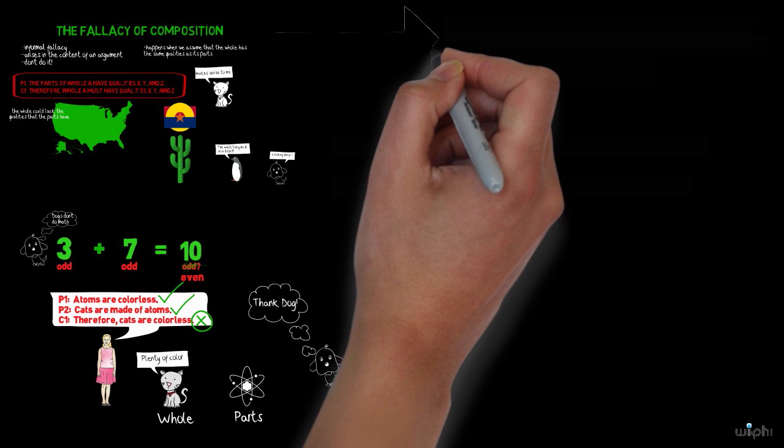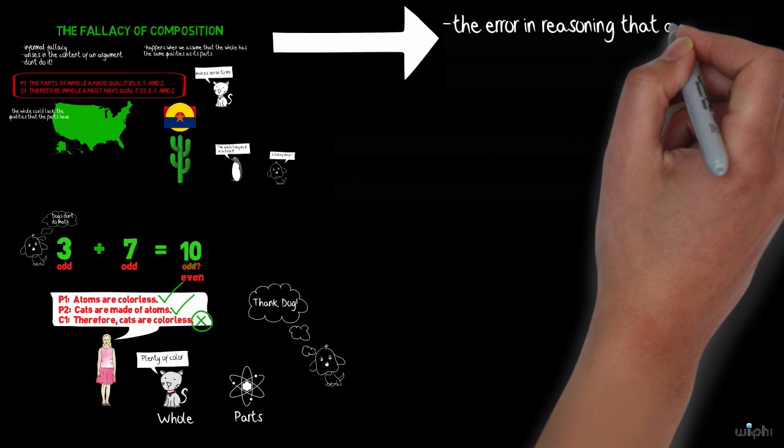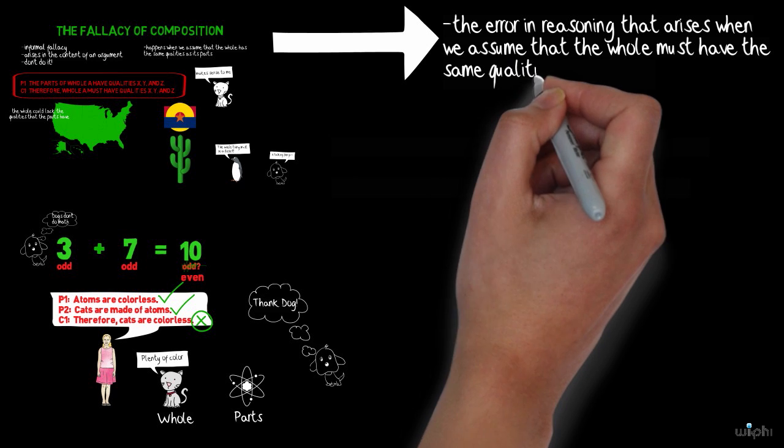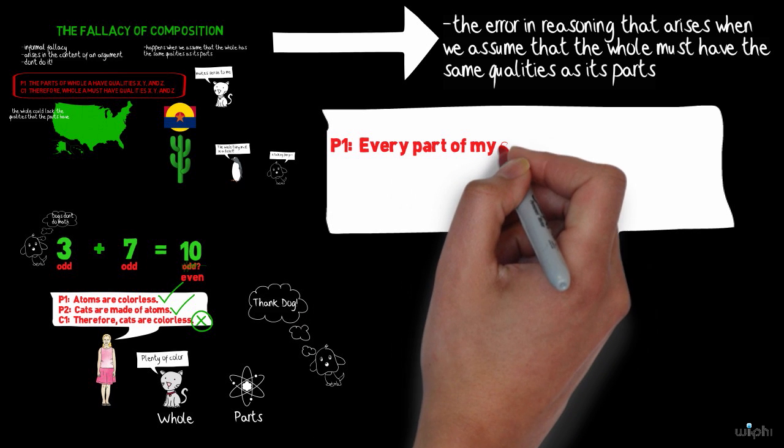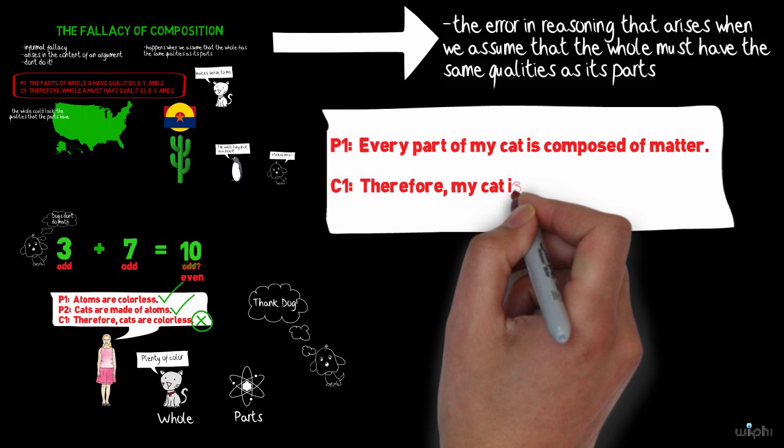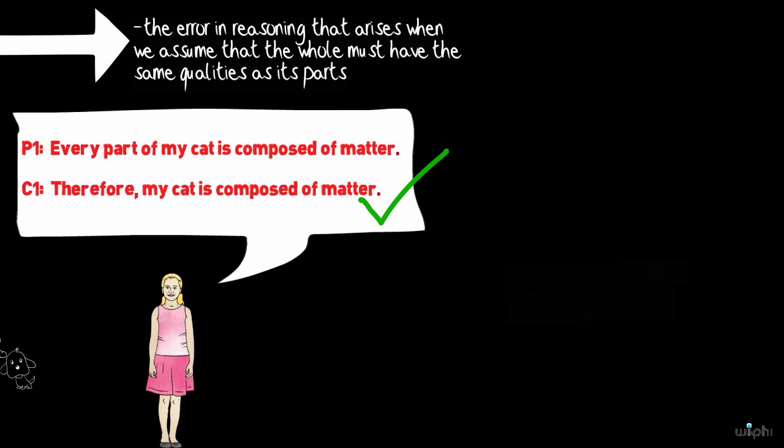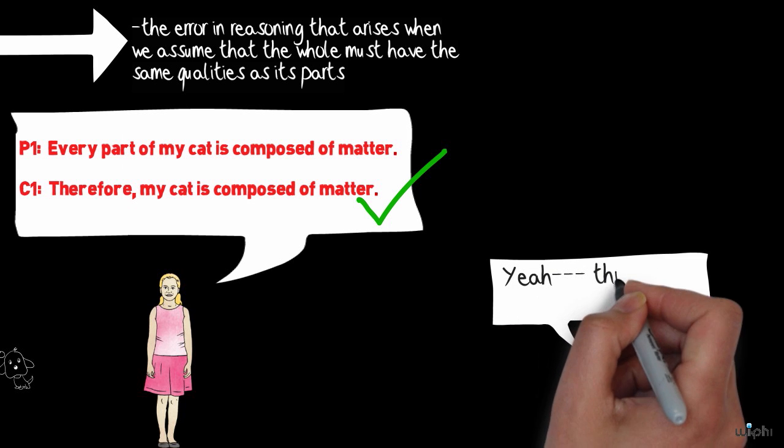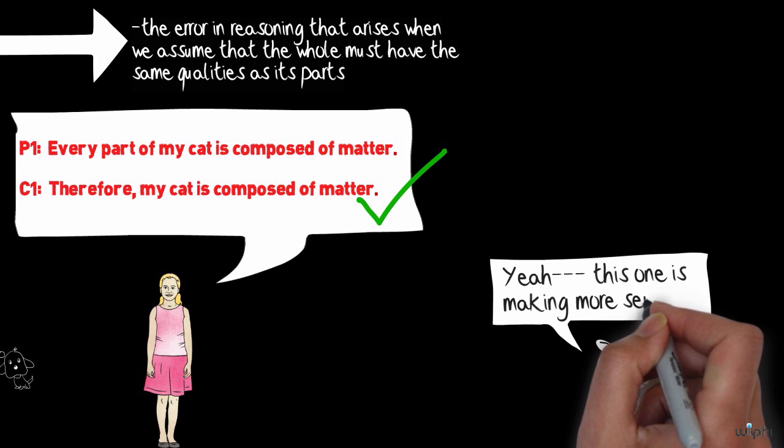So we just learned about the fallacy of composition, or the error in reasoning that comes about when one infers that the whole has the same qualities as its constituent parts. It is important, however, to note that this style of reasoning doesn't always lead to false conclusions. Your friend, for instance, might argue the following. Premise 1: Every part of my cat is composed of matter. Conclusion: Therefore, my cat is composed of matter. Her argument leads to a true conclusion. The fallacy only arises when we don't have a good reason to infer that the whole has the same qualities as its parts. So remember to stay vigilant of this fallacy and not to worry about any colorless cats.